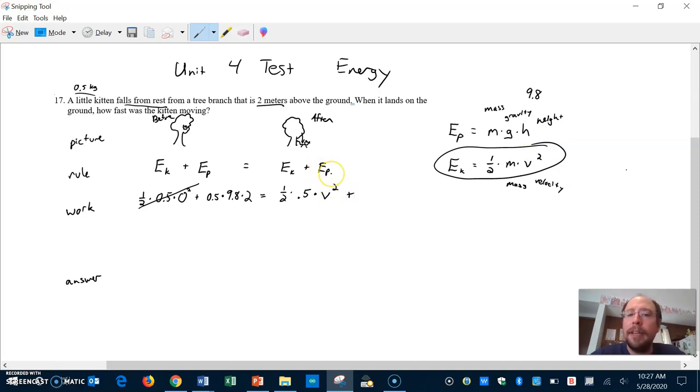And plus the potential energy. It's this equation. It's mass. The mass of the kitten is 0.5 kilograms times gravity. Gravity. It's just this 9.8. Times the height. Well, the height here, afterwards, it's not 2 meters anymore. The height is actually just 0 meters because the kitten is on the ground. So the height is 0.